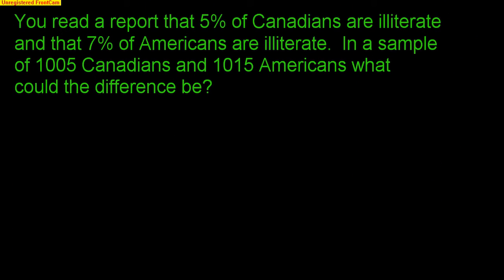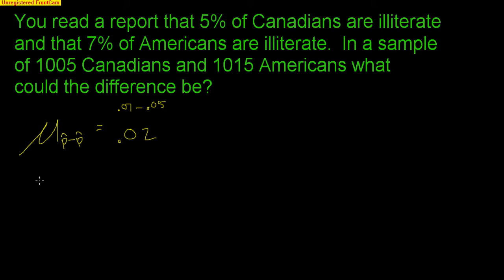Here's an example: you read a report that 5% of Canadians are illiterate and 7% of Americans are illiterate. In a sample of 1,005 Canadians and 1,015 Americans, what could the difference be? The expected difference should be 2% — 7% Americans minus 5% Canadians means Americans are supposed to be 2% more illiterate than Canadians. But samples vary, so we might not always see that exact difference — it could be a little higher or a little lower. That's where the standard deviation of the difference comes in.